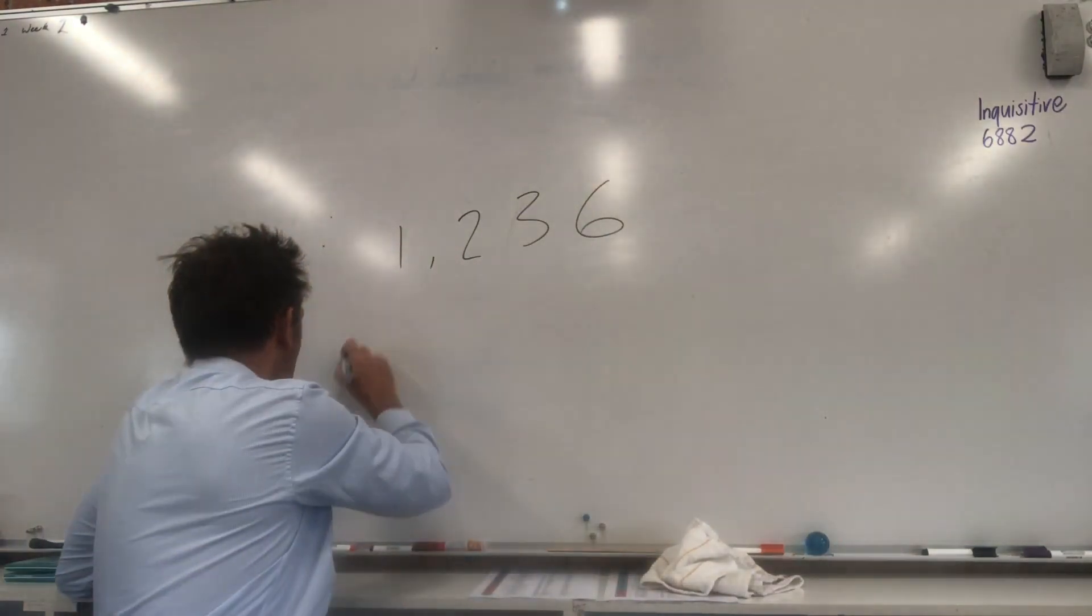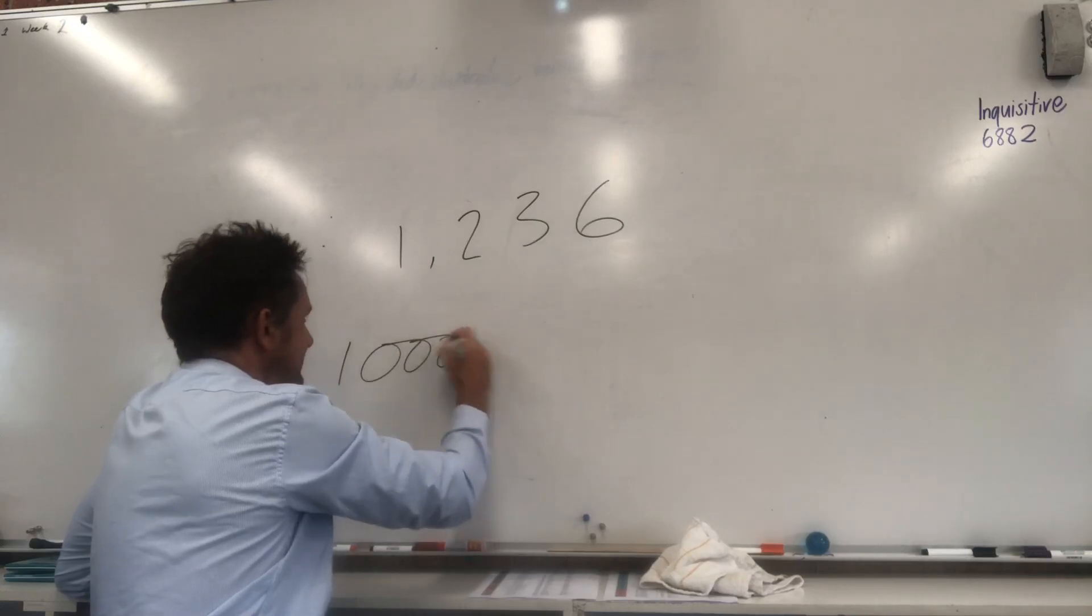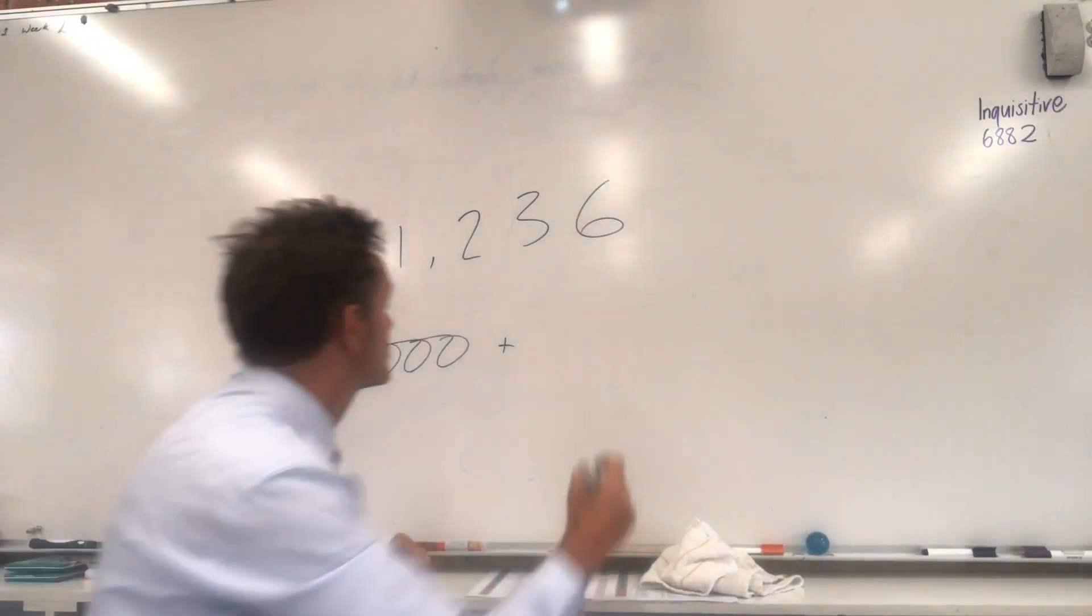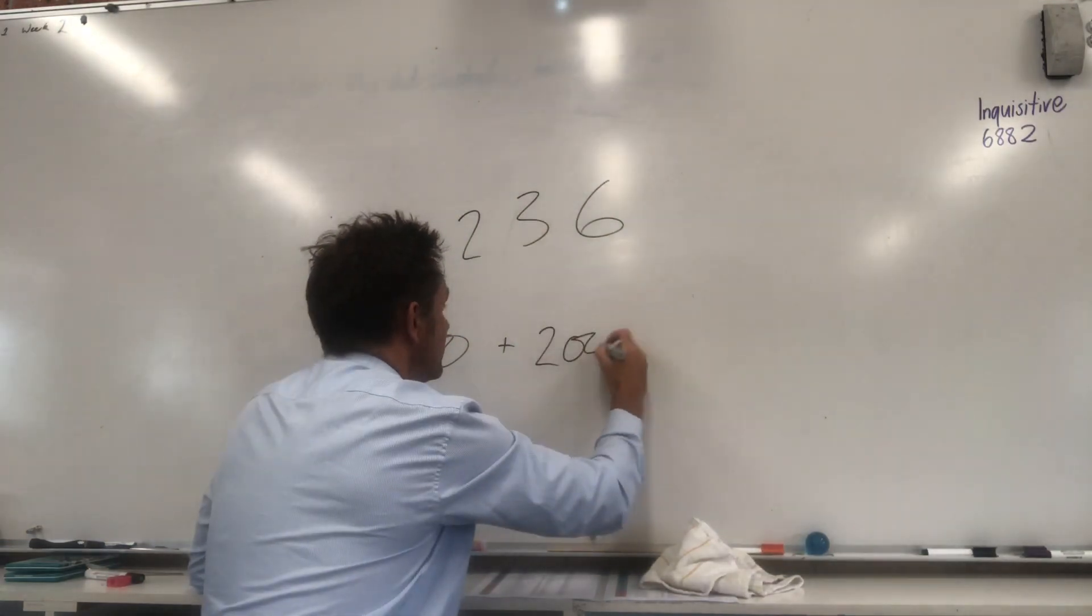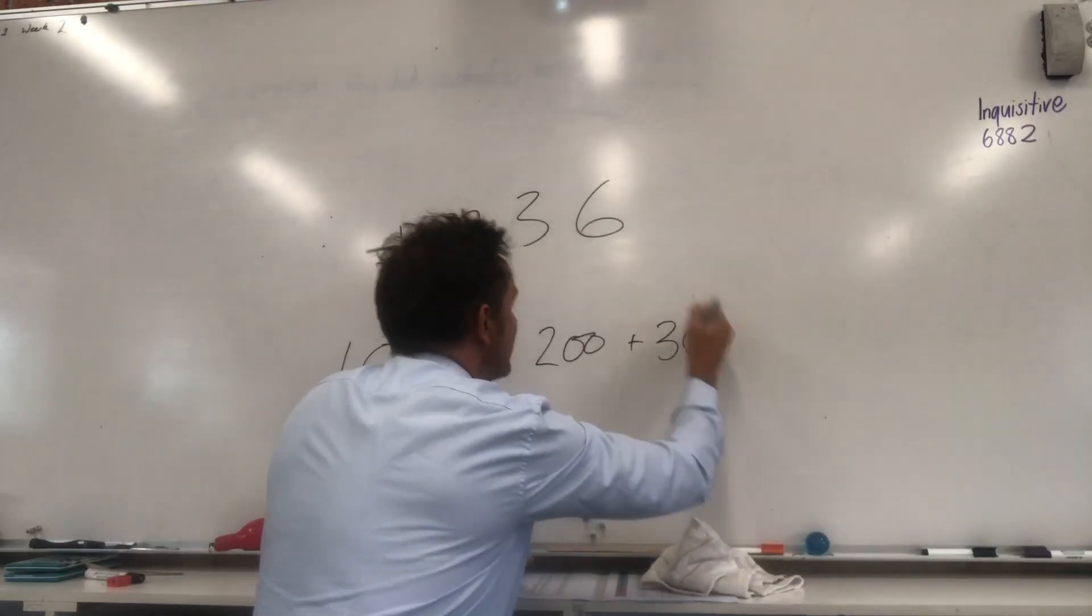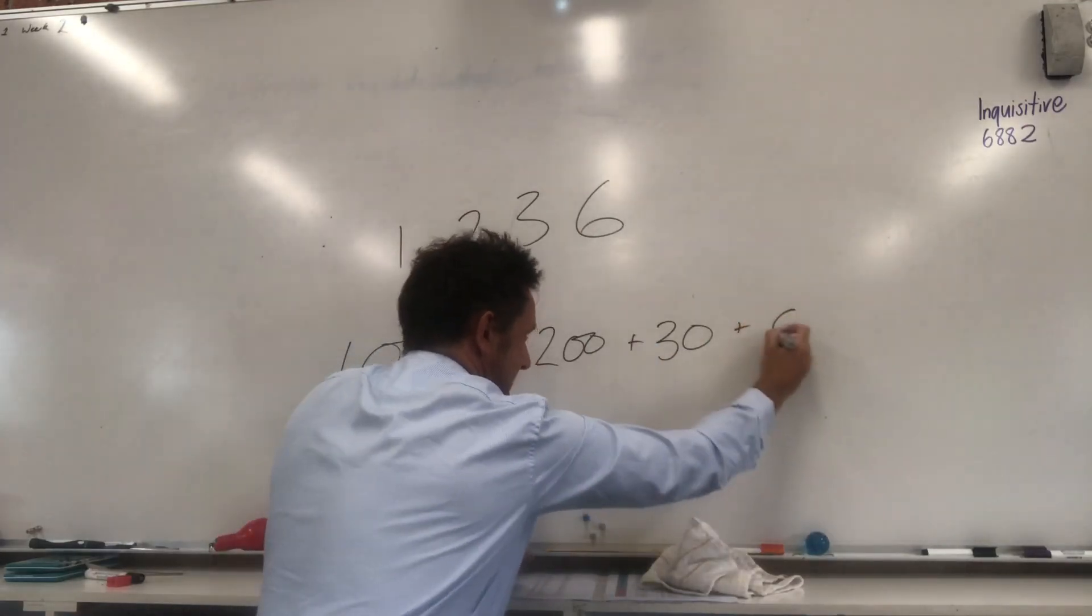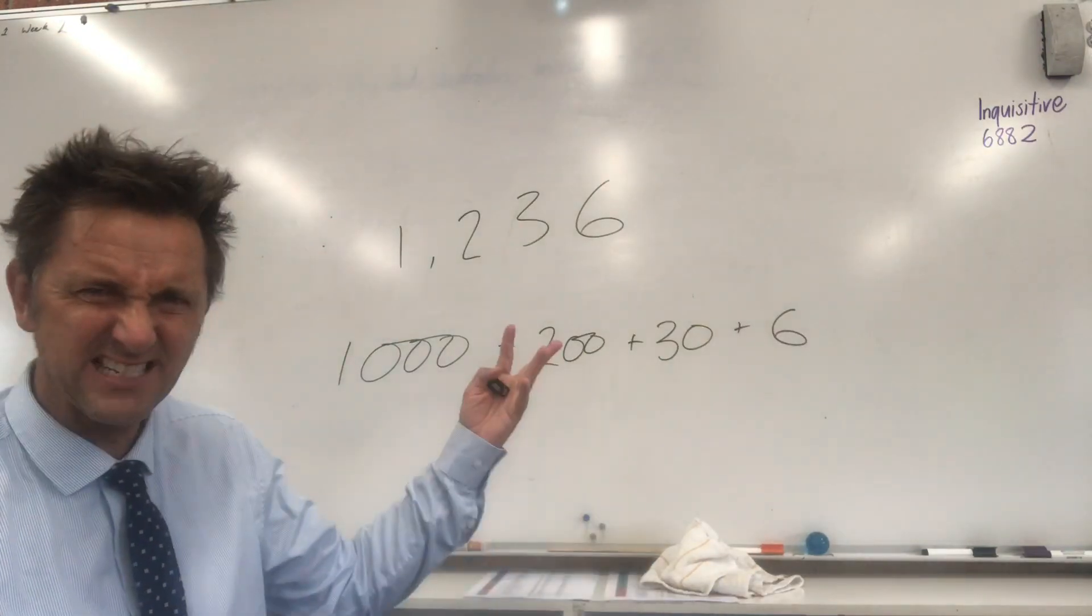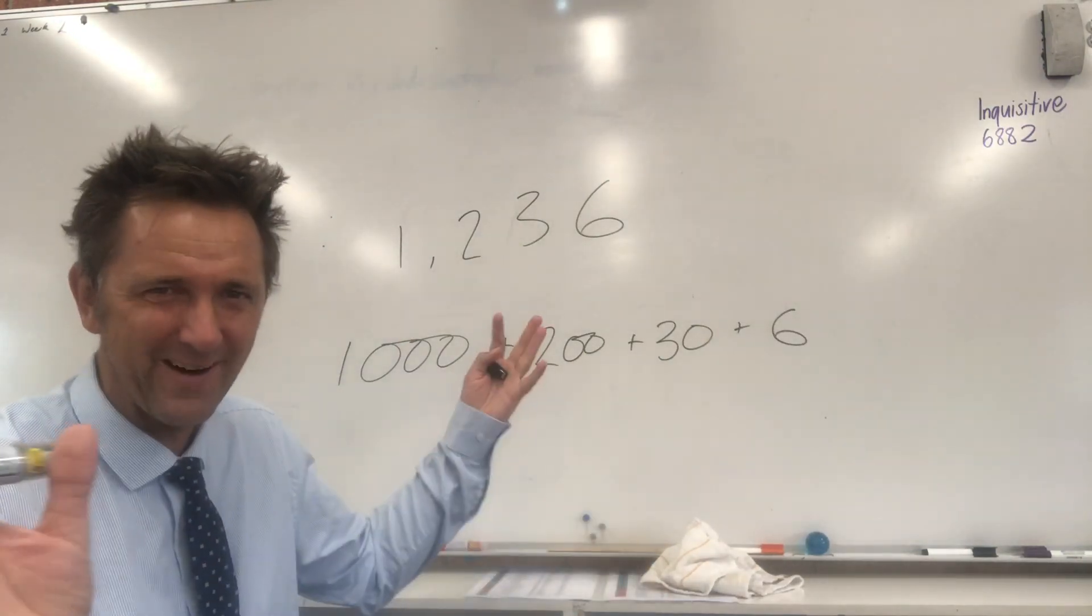This 1 here is going to become 1,000 plus this 2 here, which is really 200, plus this 3 here, which is really 30, plus this 6 here, which is really 6. And there you go. Now we've expanded a number in the thousands. Hooray for us.